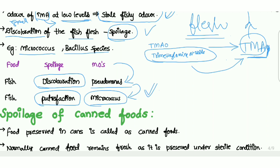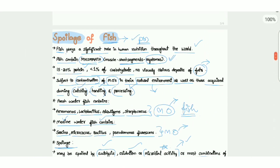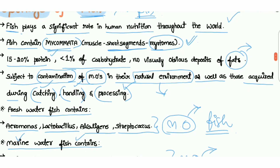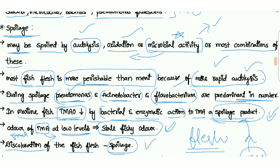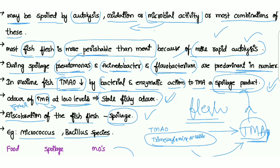To recall: fish plays a significant role in human nutrition throughout the world. Fish contains mycomata and is a protein-rich food, almost absent in fats. It is subject to contamination in the natural environment and during catching, handling, and processing. Freshwater fish contains Aeromonas, Lactobacillus, Alkaligenes, and Streptococcus; marine water fish contains Sarcina, Micrococcus, Bacillus, Pseudomonas, and Pseudomonas fluorescens. Spoilage occurs through autolysis, oxidation, and microbial activity. TMAO reduces to TMA, which causes a stale fishy odor, and discoloration will also occur.